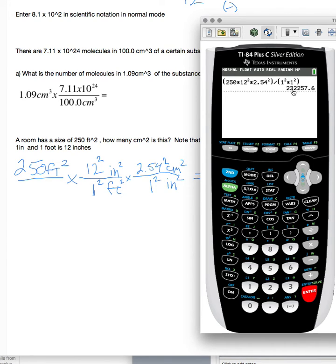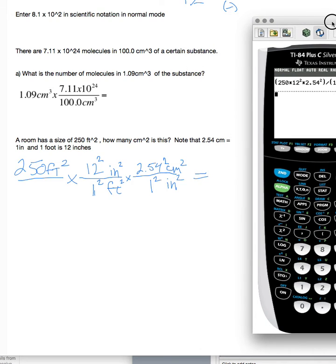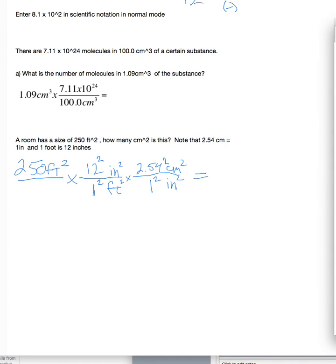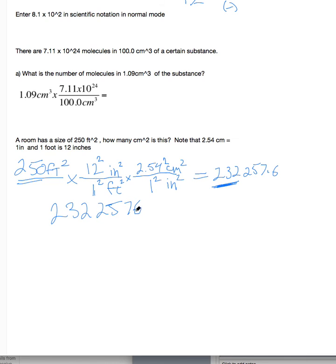And the answer is 232,257.6 centimeters squared. That's a big number, right? So let's write that down. 232,257.6. That seems pretty big. We only have three significant figures, right? So we can only write this, we can only report this out to here. So let's write a little bit bigger, 232,257.6. And in scientific notation, remember, it has to be between one and 10. So we're going to say it's 2.32 something or other, right? Let's figure out what that is. And we'll just use our calculator to help us out a little bit.